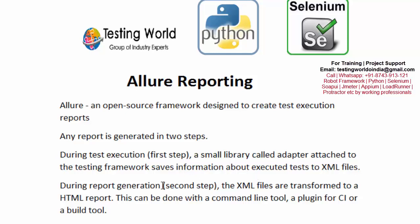In the second step we can convert this XML file to an HTML report. This conversion from XML to HTML can be done by a command line tool or a plugin for CI tools like Jenkins or a build tool. I will show you how we can convert to HTML format as well.